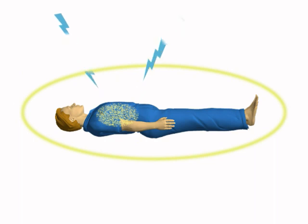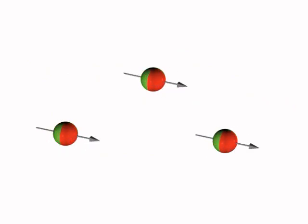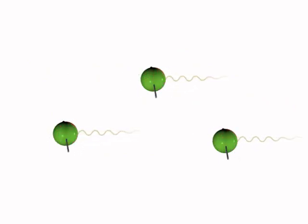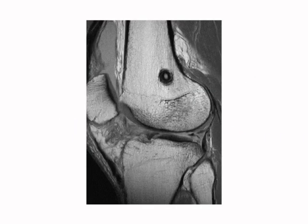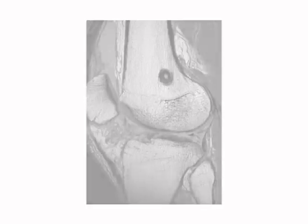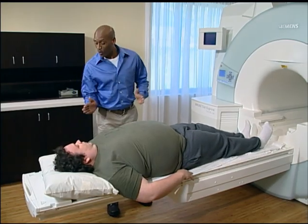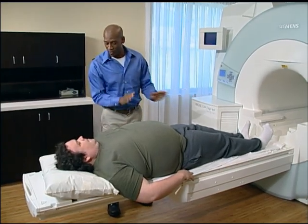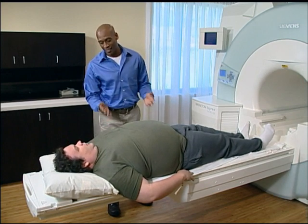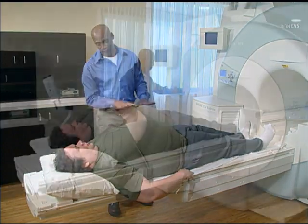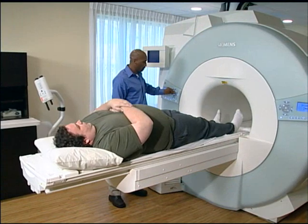Different signals emitted by different body tissues are then used to differentiate individual anatomy. When tissue is damaged, its composition changes and gives off an uncharacteristic signal. So when displayed, that damaged tissue is distinguishable from surrounding healthy tissue. It's important to point out that MRI utilizes magnetic fields and radio waves — patients are not exposed to x-rays or other ionizing radiation.